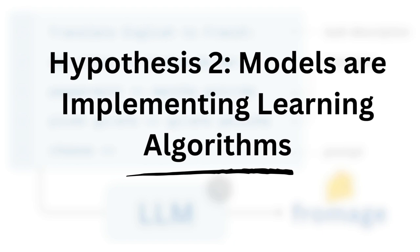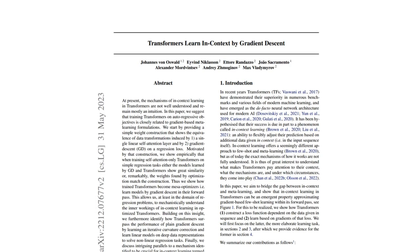The hypothesis is that the large language models are in fact implementing learning algorithm implicitly to do in-context learning, and that actual learning is happening.